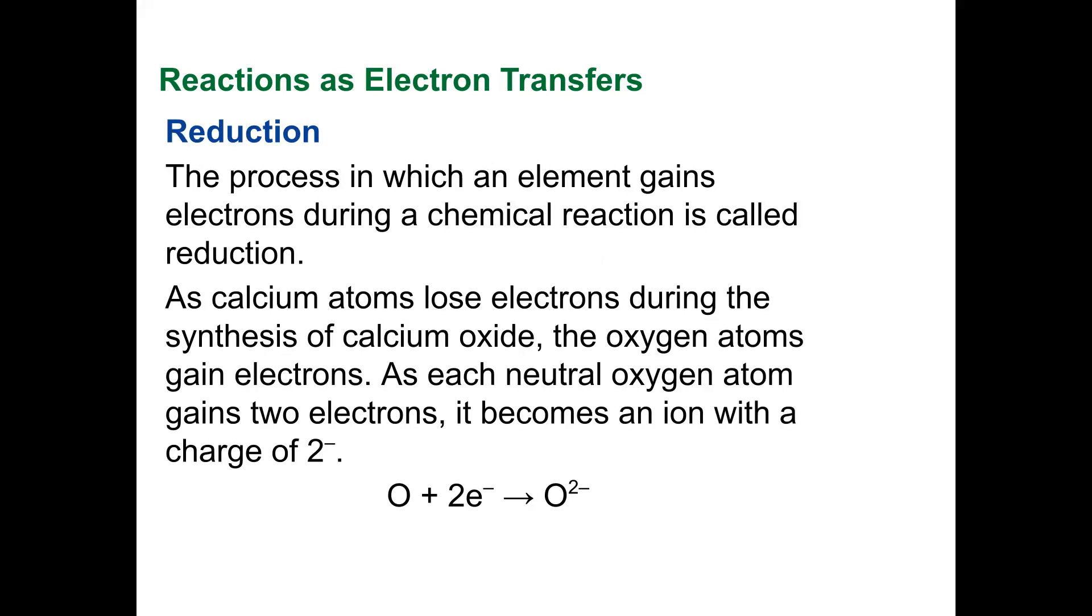Reduction. Well, if something's giving off some electrons, they got to go somewhere. So the process in which an element gains electrons in a chemical reaction is called reduction. As calcium atoms lose their electrons during the synthesis of calcium oxide, the oxygen atoms gain electrons.